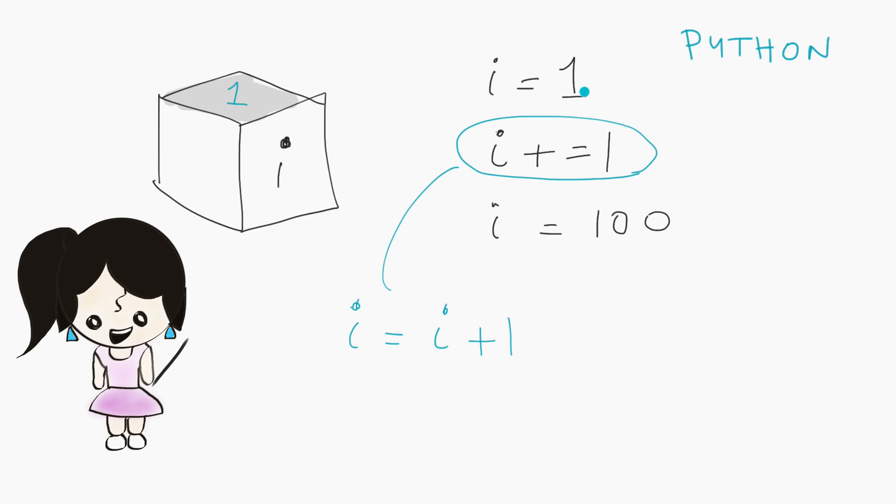And what does that mean? So i was 1 before, inside this box, this variable. And now I have i plus 1, which is 1 plus 1. This will go into 2. So this will become 2. Okay? So now this box, so this variable contains 2.